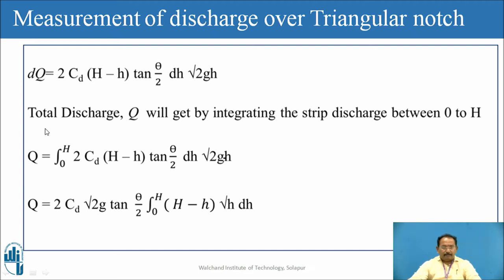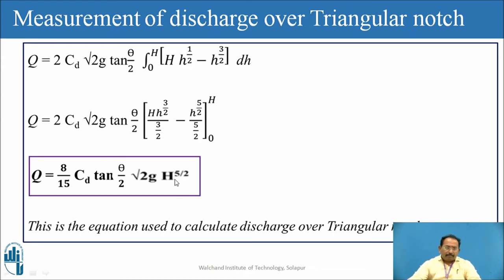For total discharge, integrate dq from limit 0 to H. Taking constant terms outside the integration and integrating with respect to h, simplifying, we find the LCM is 15, giving 10 minus 6 = 4, multiplied by 2. The final expression is: Q = (8/15)·Cd·√(2g)·tan(θ/2)·H^(5/2).